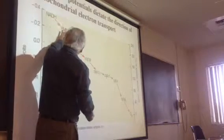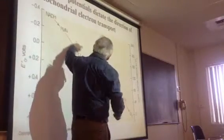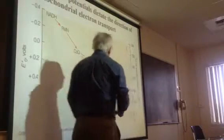NADH is higher energy than the flavin and the cytochromes and so on. So electrons will flow in this direction to oxygen energetically downhill.